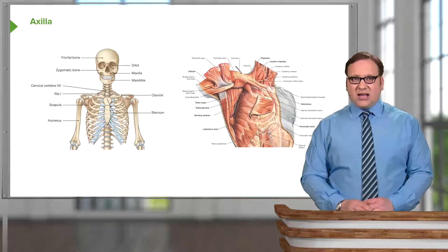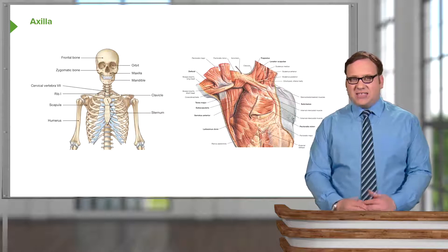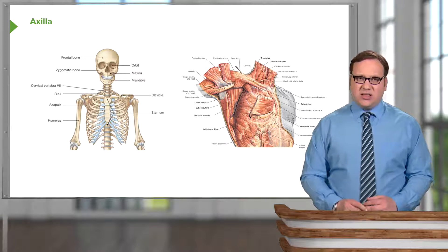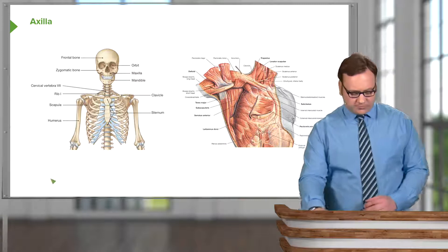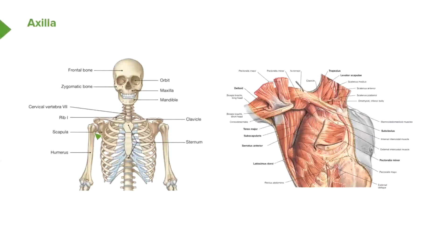The axilla is a space located between the humerus and the chest wall. Here we can see the humerus, and in this space between the humerus laterally and the chest wall medially, we find the axilla. It's a pyramidal space, and most of its boundaries are formed by muscles.